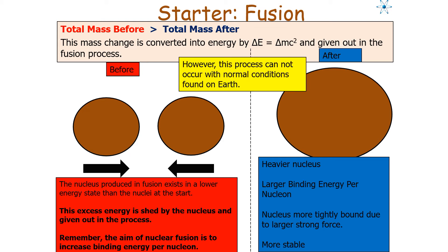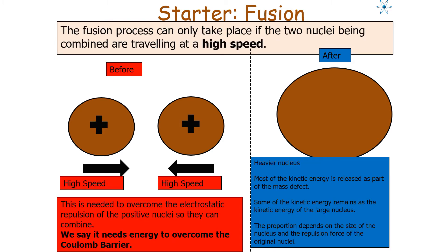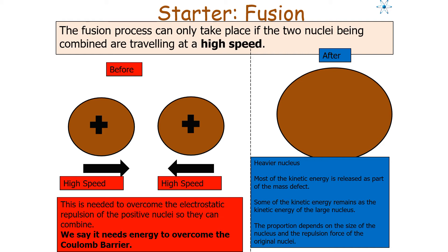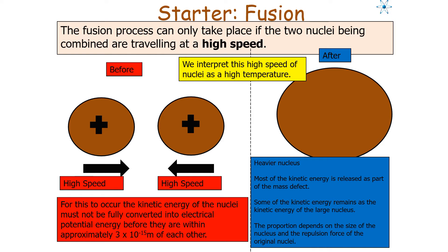This process cannot occur under normal conditions found on Earth, because fusion can only take place if the two nuclei are combined at high speed. That's because you have two positively charged nuclei, so we need to overcome the electrostatic repulsion — we need energy to overcome the Coulomb barrier of repulsion. About 1 MeV of kinetic energy is needed to make the nuclei fuse together. Nuclei with less kinetic energy will be deflected by the electrostatic repulsion.